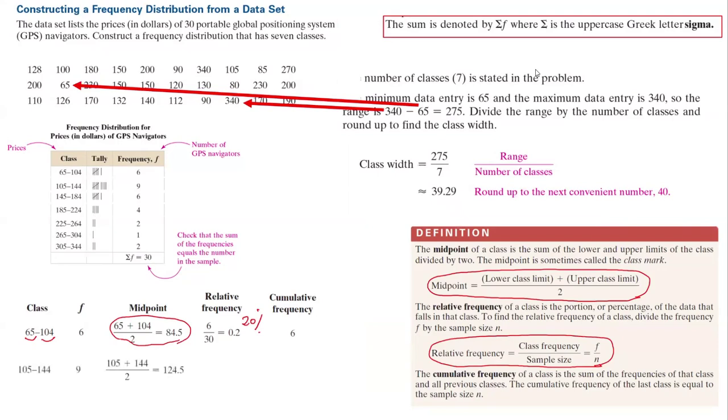We continue this process. The second class starts at 105, stops at 144. The midpoint is 105 plus 144 divided by 2. The relative frequency is 9 divided by 30, or 30 percent. Now to find the cumulative frequency, you're going to add 6 and 9, which is 15. And for the third class, you follow the same steps.